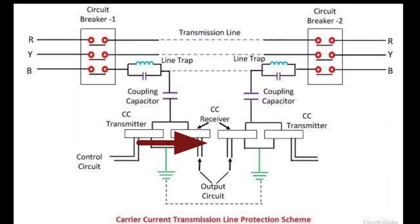The receiver converts the received carrier current into DC voltage that can be used in a relay or other circuit to perform any desired function. The voltage is zero when the carrier current is not being received.